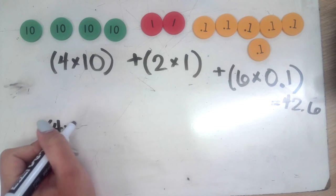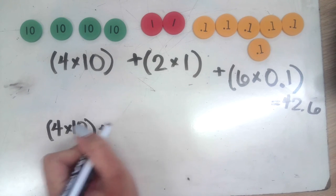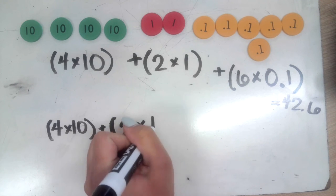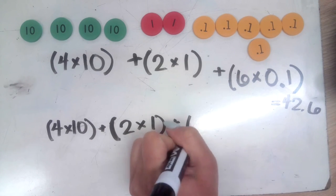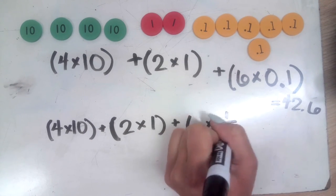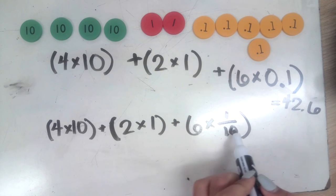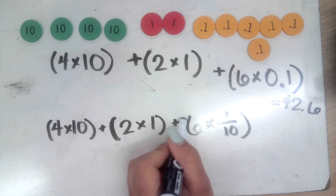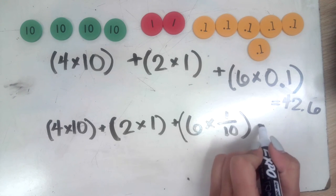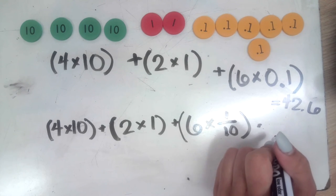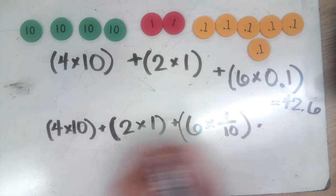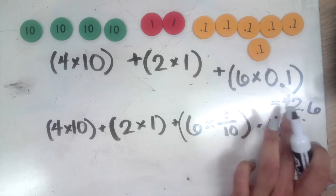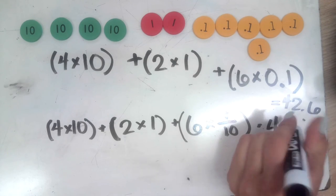So I can also represent this a little bit differently if I wanted to and still get the same results. When I add all these together I get 42.6. I could however represent this equation like this: I have 4 times one ten, 2 times one one, and 6 times one tenth.